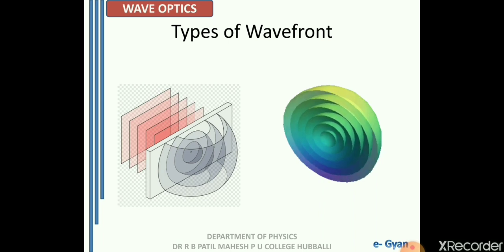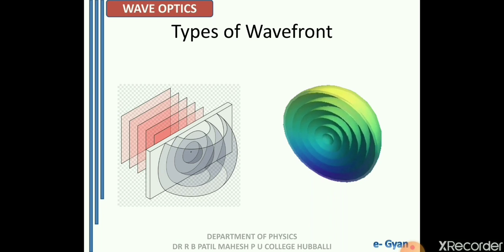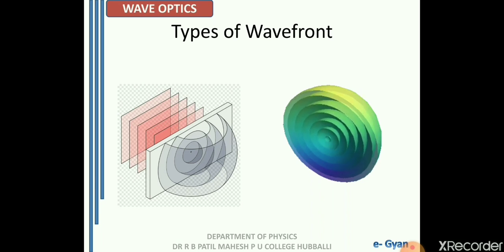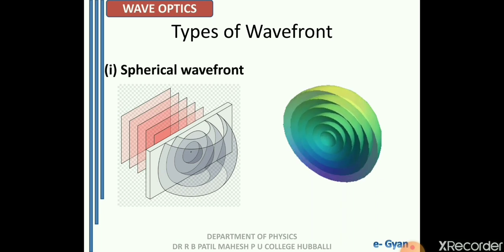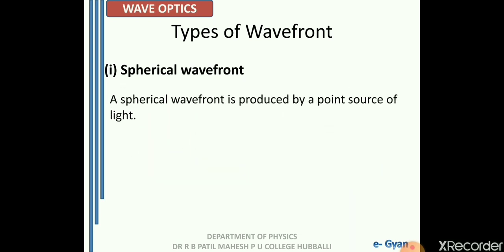If you focus on the three-dimensional figure, you find that the wave front emerges out from a point source — a spherical structure is emerging out. I have taken only half of the structure so that you can understand from where the spherical structure gets emerged. It emerges from the center and goes on enlarging because the phase of the vibrations increases as it propagates further. On the two-dimensional structure, this spherical structure comes from a pinhole. So this kind of wave front is called a spherical wave front, produced by a point source of light.